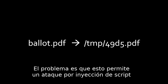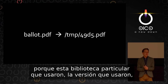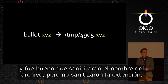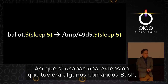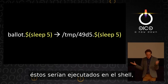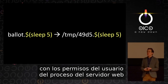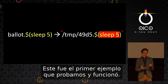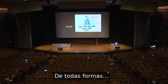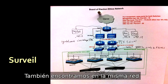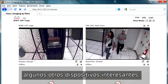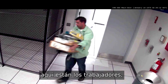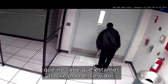The problem was a shell injection attack: this particular library version assembled a string and used a system call to pass it to bash. It sanitized the base name of the file but not the extension. So if you used a filename extension with bash commands in it, they would be executed at the shell under the permissions of the web server process running the election. We also found on the same network some webcams with no usernames or passwords in the data center, giving us a live view of the machines running the election and the workers.